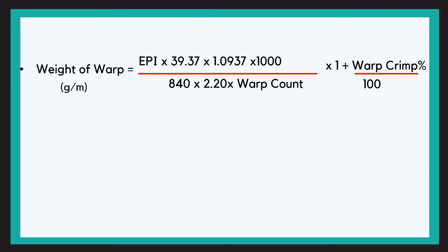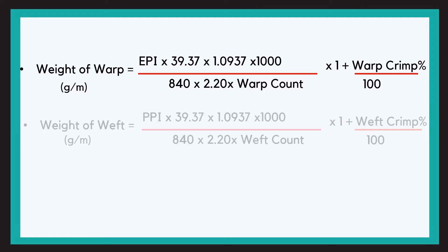2.20 is for converting the pounds into kilograms. And kgs we convert into grams, so we already have 1000 in the numerator. And × (1 + warp crimp upon 100). As I told you earlier, because of the interlacement, there's extra warp and extra weft. Similarly, we will calculate weight of weft with PPI instead of EPI.